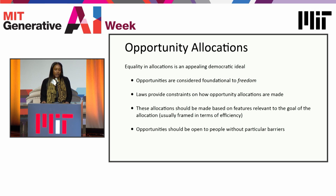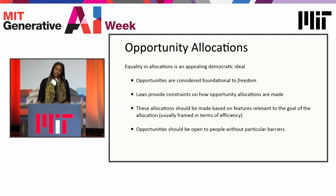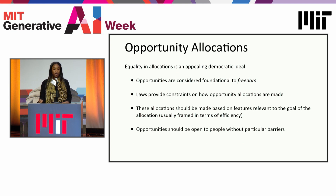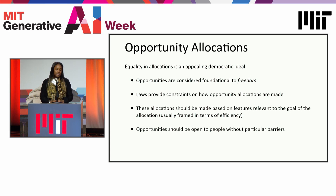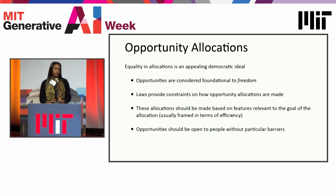Equality is a value that has been brought up a lot in discussions as we increase our algorithmically driven world with this new generative AI technology. Equality in allocations is a very appealing democratic ideal. Opportunities are considered foundational to freedom, and even our laws provide constraints on how opportunities can be allocated and how they are made. It's usually framed in terms of efficiency — these allocations should be made based on features relevant to the goal of the allocation, and opportunities should be open to people without certain kinds of barriers.